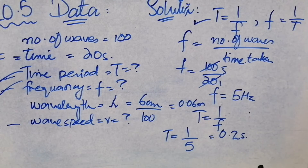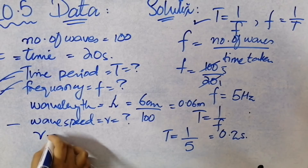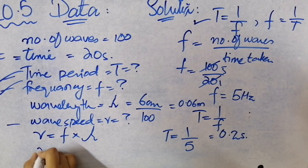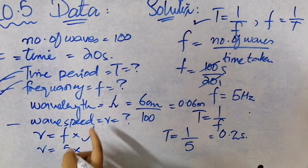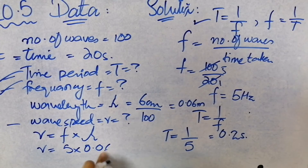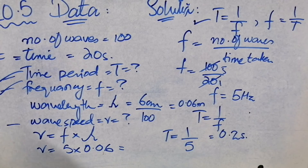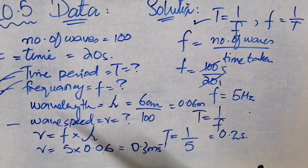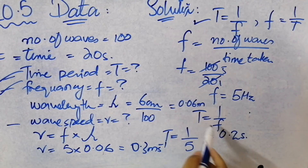Now for wave speed, we have the formula V is equal to frequency multiplied by lambda. So V equals 5 multiplied by 0.06, and the wave speed you get is 0.3 meters per second. So our final answers are: frequency = 5 Hz, time period = 0.2 seconds, and wave speed = 0.3 meters per second.